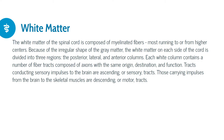The white matter of the spinal cord is composed of myelinated fibers, most running to or from higher centers. Because of the irregular shape of the gray matter, the white matter on each side is divided into three regions: the posterior, lateral, and anterior columns. Each column contains fiber tracts composed of axons with the same origin, destination, and function. Tracts conducting sensory impulses to the brain are ascending or sensory tracts; those carrying impulses from the brain to skeletal muscles are descending or motor tracts.